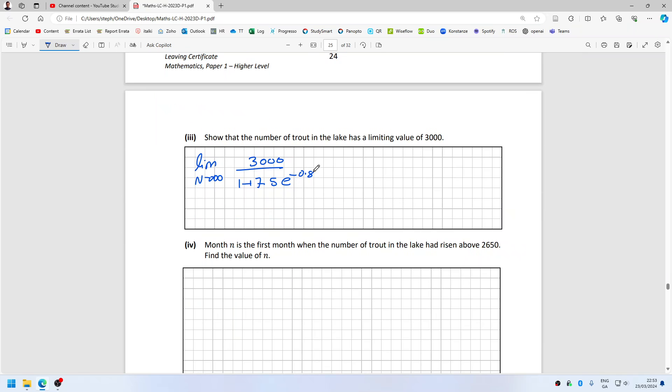I should have said t. That would be 3000 over 1 plus 7.5 times zero.